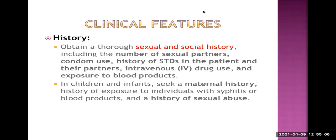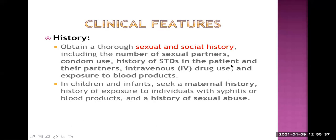For the clinical features of syphilis, obtain a thorough sexual and social history: number of sexual partners, use of condoms, history of STI in the patient and their partner, intravenous drug use or abuse, and exposure to blood products. In children and infants, take a good maternal history because they usually get vertical transmission from the mother. Sometimes contaminated blood products are the source, and very rarely, there is a history of sexual abuse in the child.